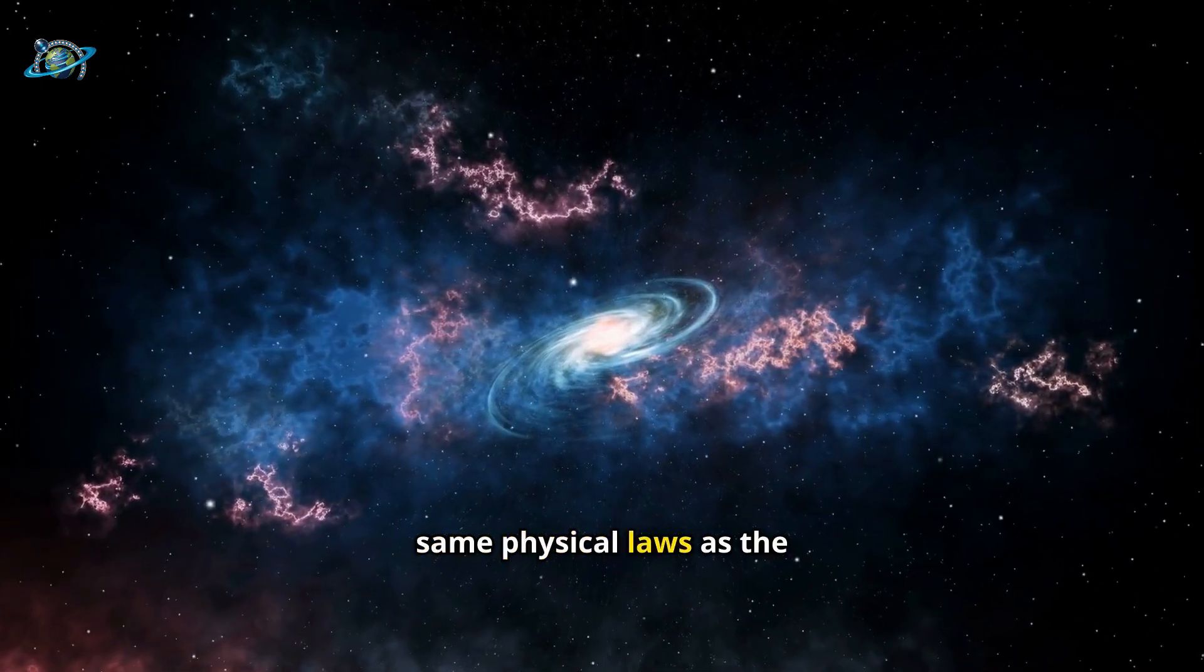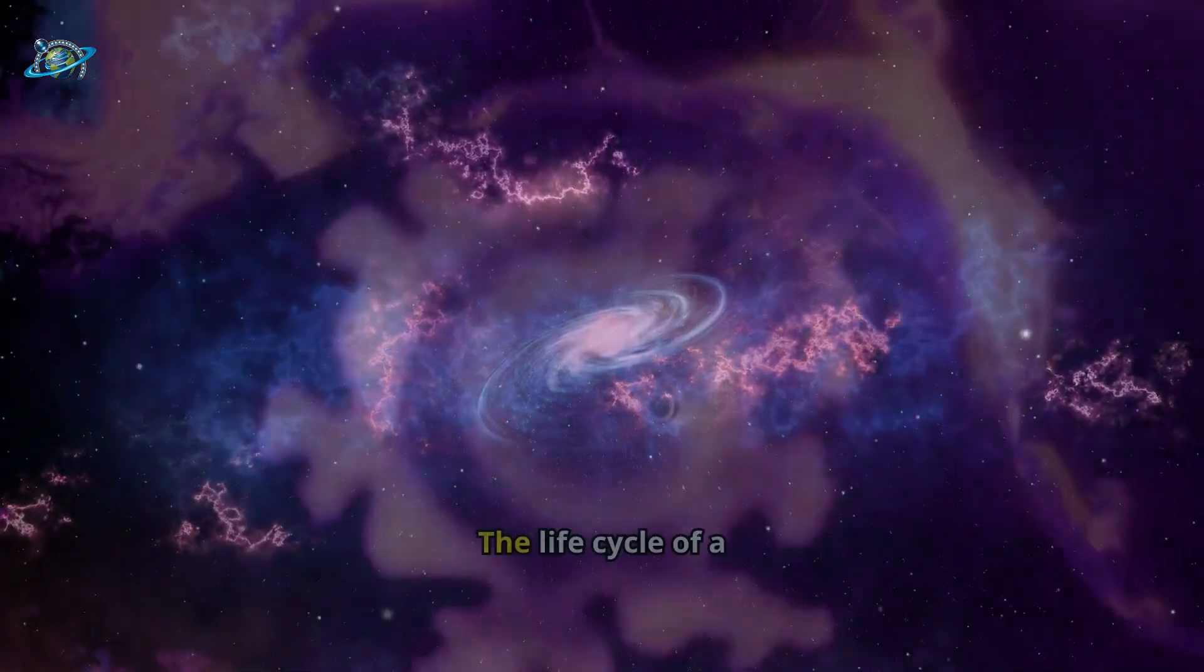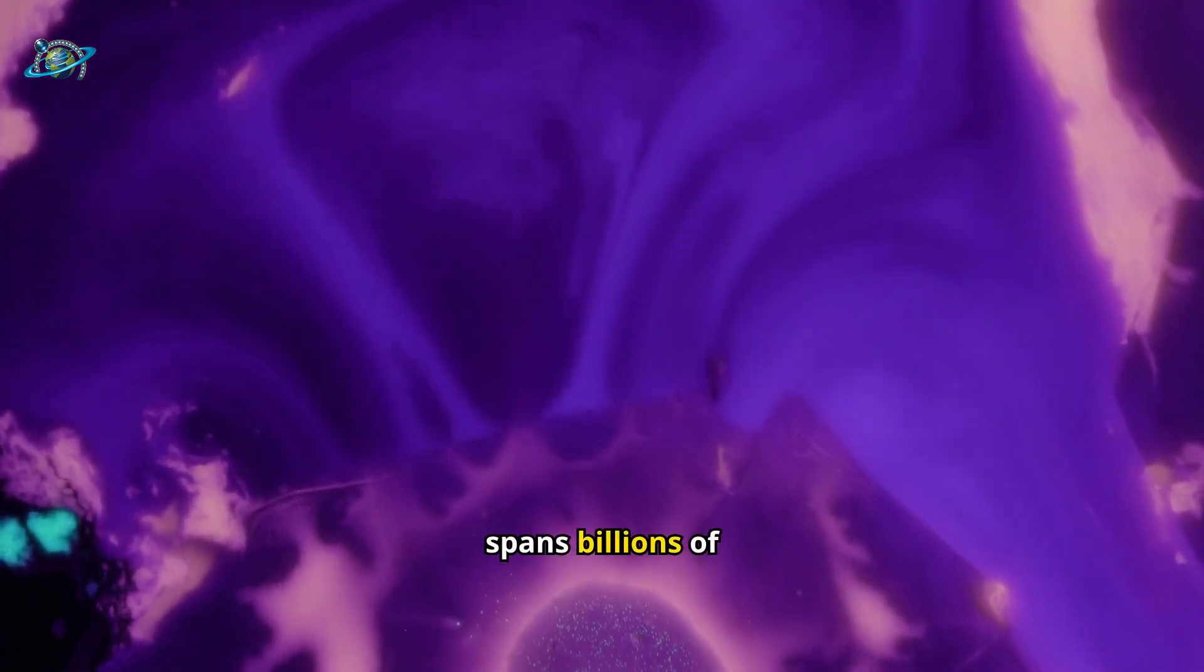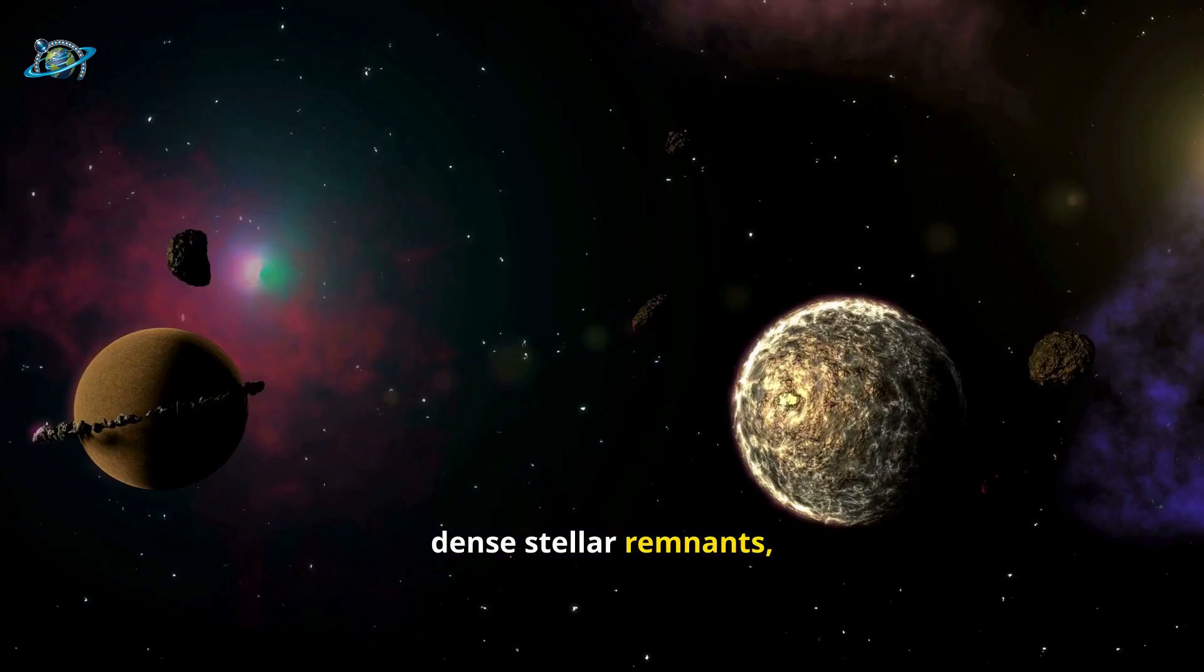The life cycle of a supermassive black hole spans billions of years. They begin as dense stellar remnants, grow by accreting mass, and can eventually merge with other black holes.